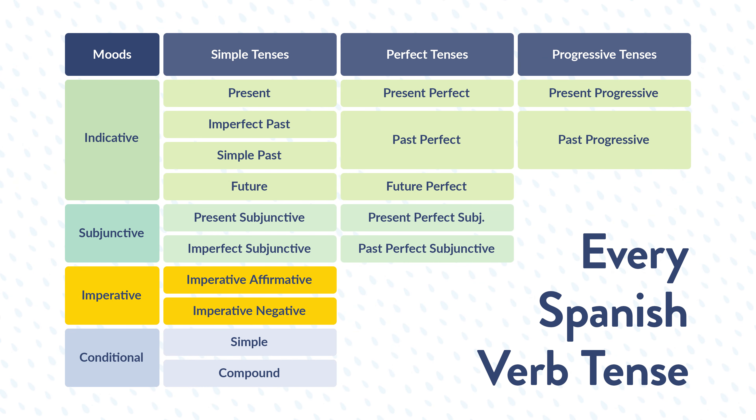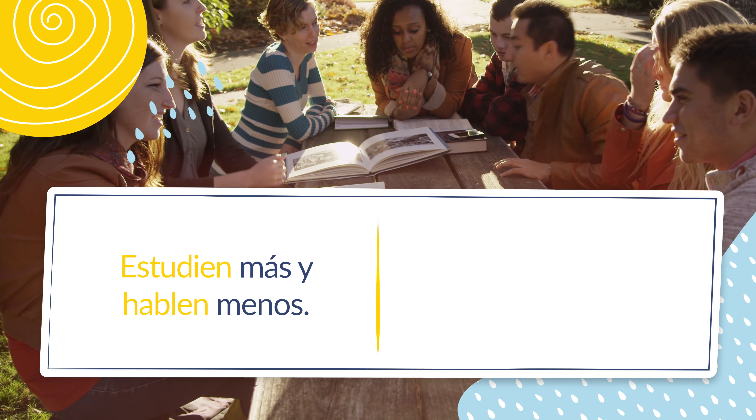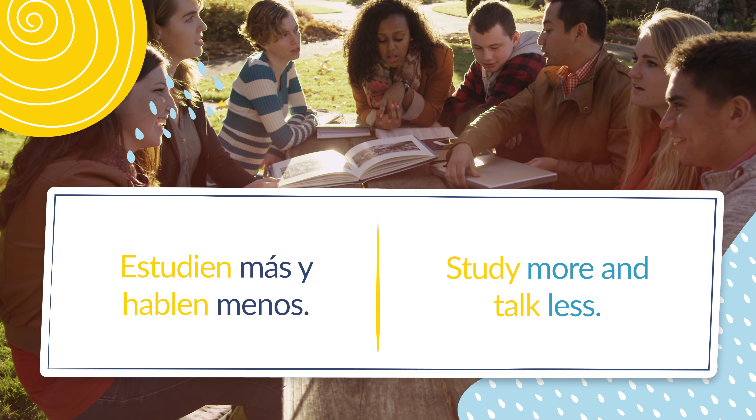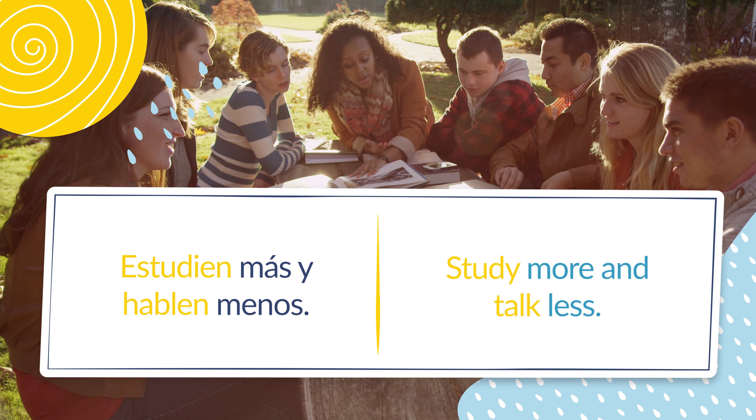Since the imperative is used to tell people to do something, it is only used with the personal pronouns tú, usted, ustedes, and nosotros. There are actually two forms of imperative conjugation, depending on whether the command is in the affirmative or the negative. Let's see an example sentence: Estudien más y hablen menos — Study more and talk less — which is a great tip, unless you're learning a language, then you should study and talk.